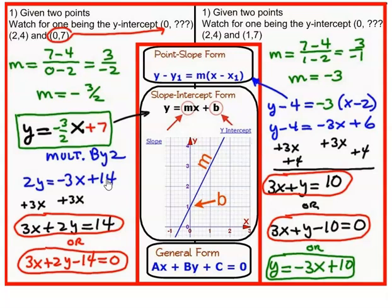And we need to get the variables on the same side. So I add 3x to both sides. That gets all the variables on the left. 3x plus 2y equals 14.